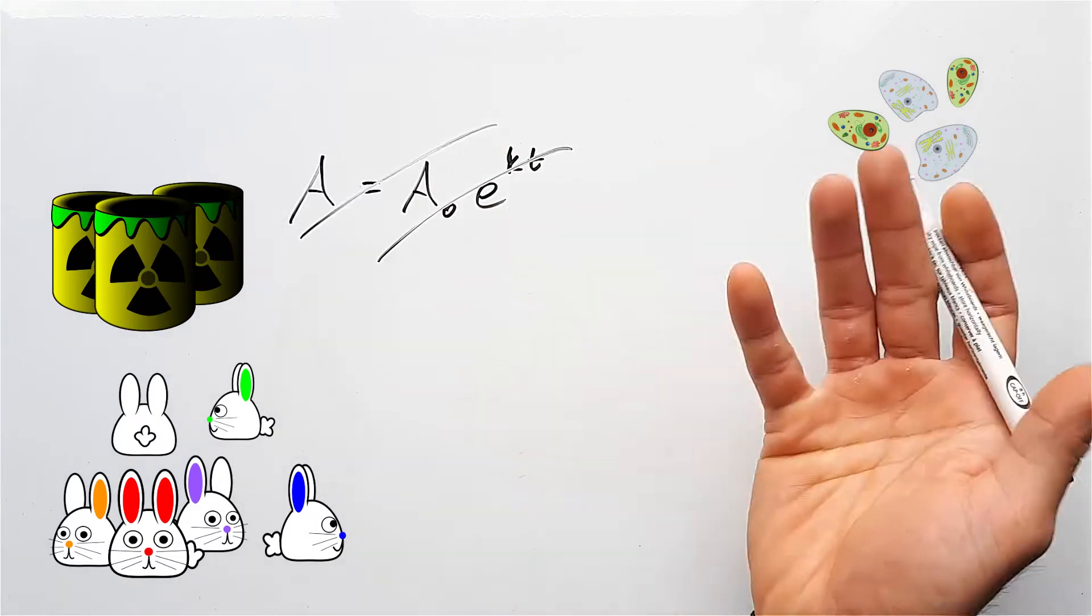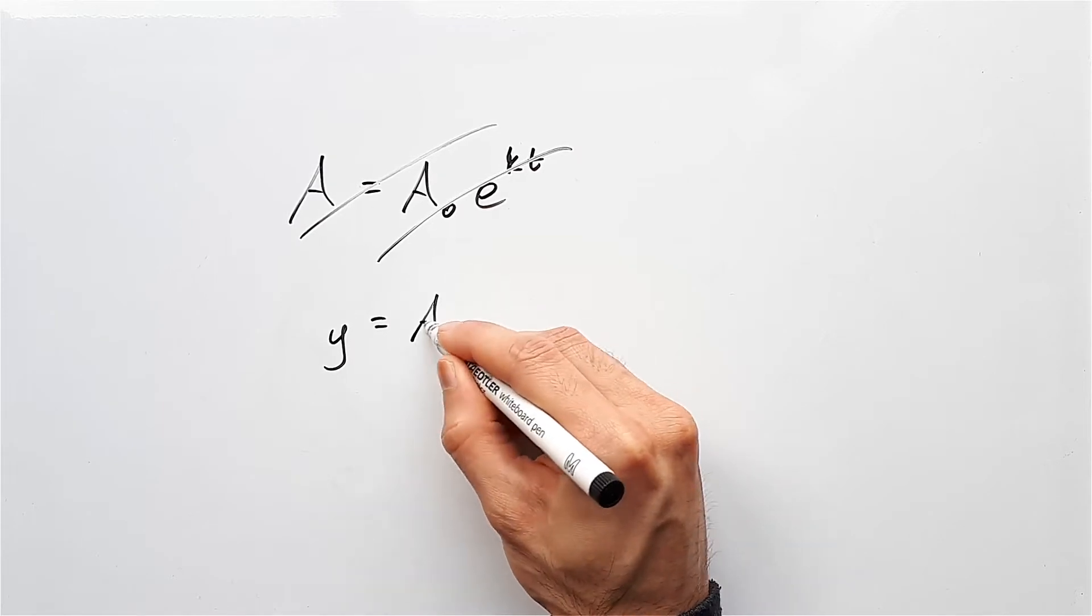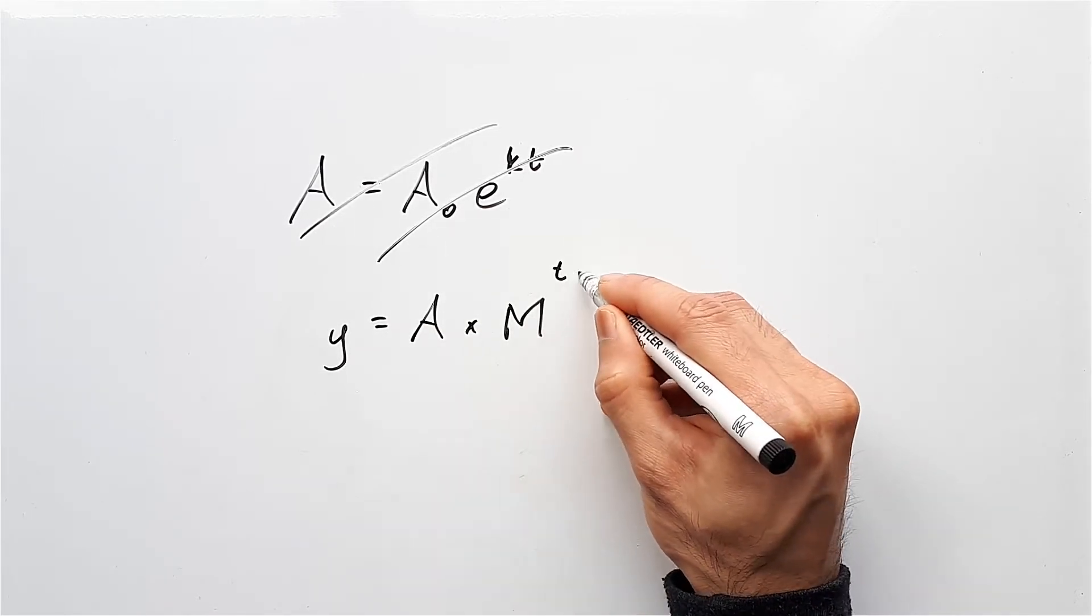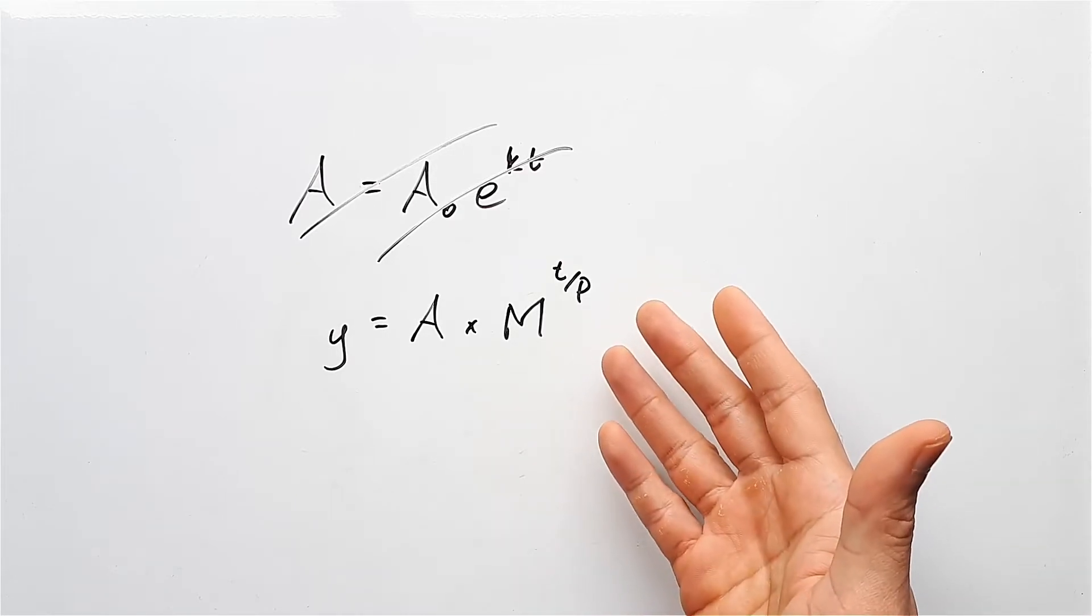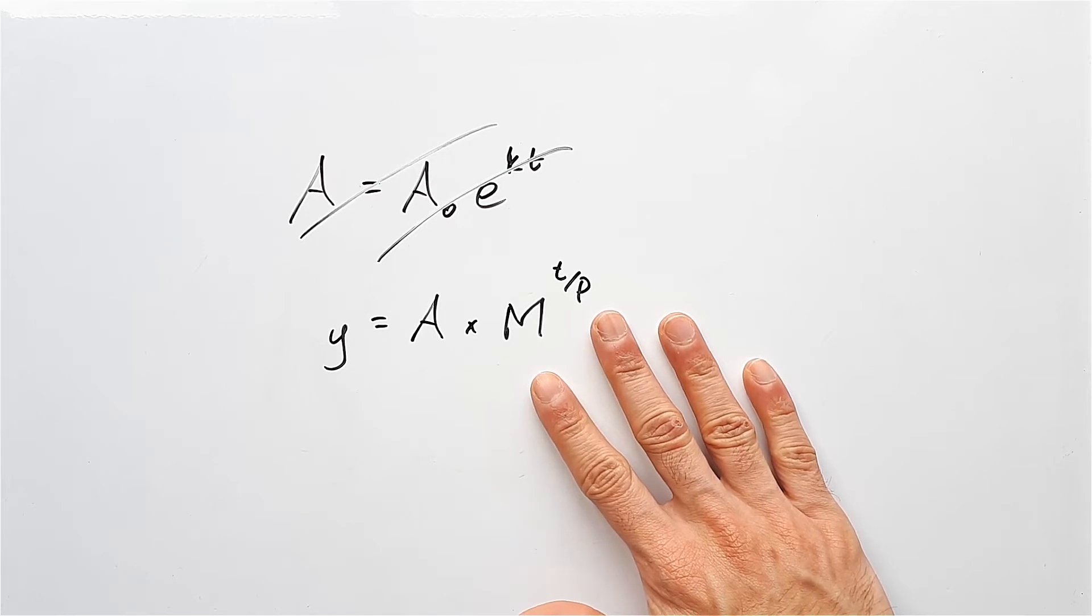But I don't like using this formula and I have a different way to do this, where I would say something like y equals A times M to the power of t over p. This looks more complicated, but the implementation is much easier. So we're going to look at how this works with application questions today.